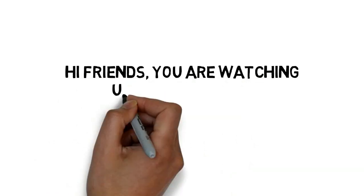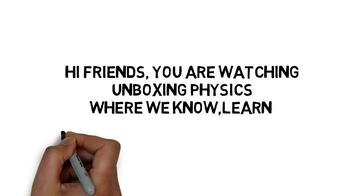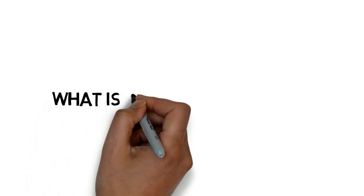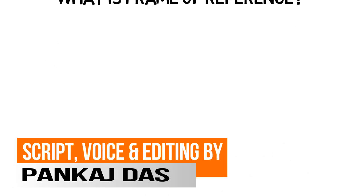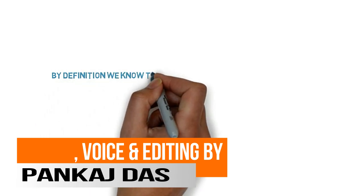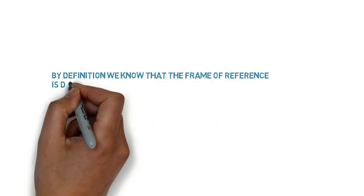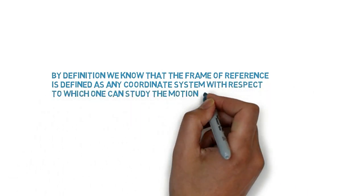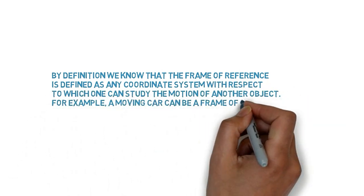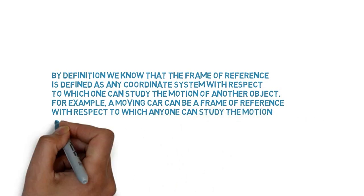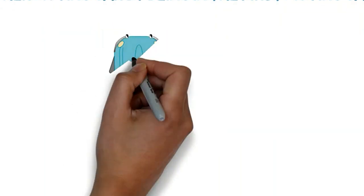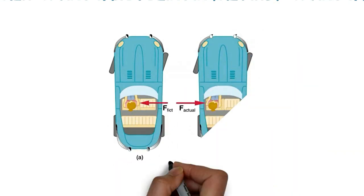Hi friends, you are watching Unboxing Physics where we learn and understand physics easily. What is frame of reference? By definition, the frame of reference is defined as any coordinate system with respect to which anyone can study the motion of another object. For example, a moving car can be a frame of reference with respect to which anyone can study the motion of another moving car by being in the first moving car itself.